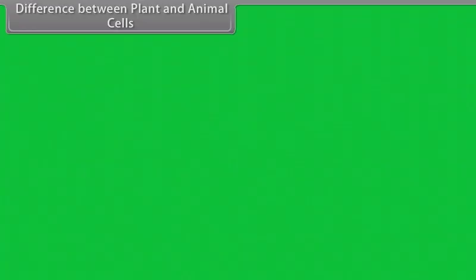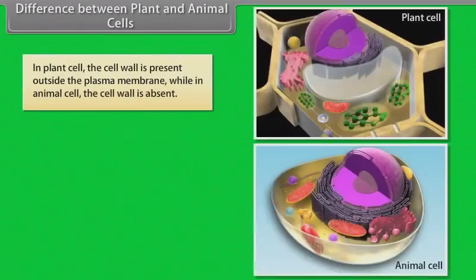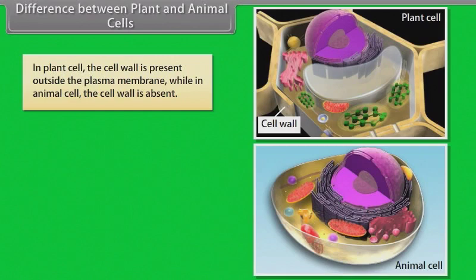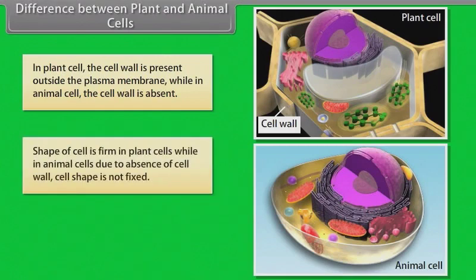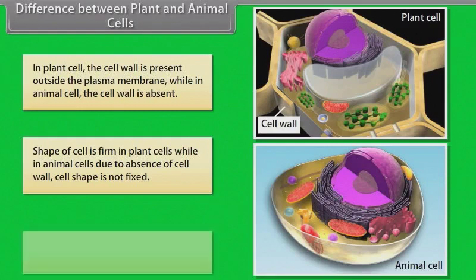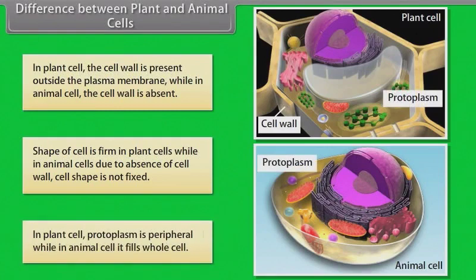Differences between plant and animal cells: In plant cells, the cell wall is present outside the plasma membrane, while in animal cells, the cell wall is absent. The shape of the cell is firm in plant cells, while in animal cells, due to absence of the cell wall, the cell shape is not fixed. In plant cells, protoplasm is peripheral, while in animal cells it fills the whole cell.